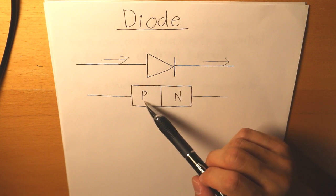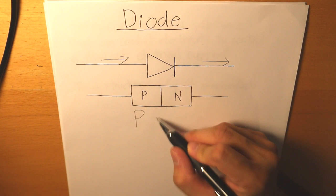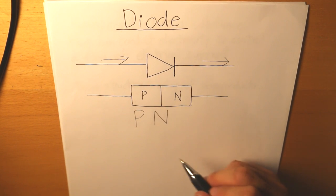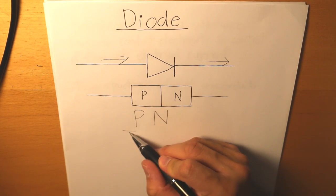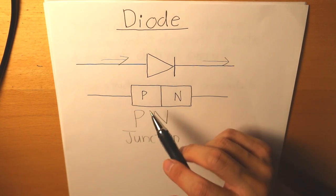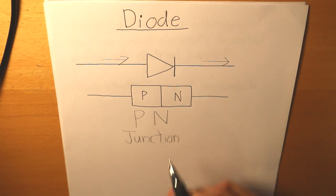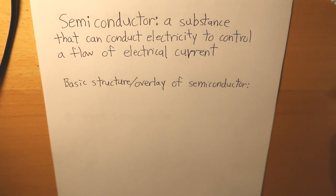This diode is simply what is called a PN junction, and the P and the N stand for something. To understand how the PN junction works, we have to talk about semiconductors.